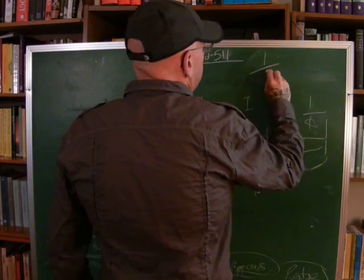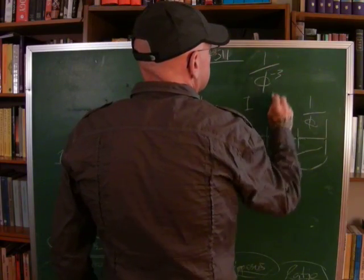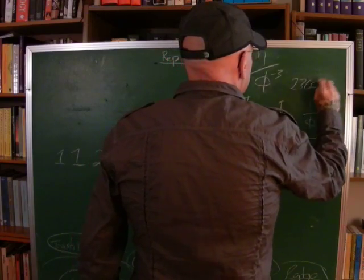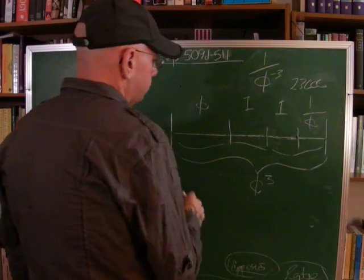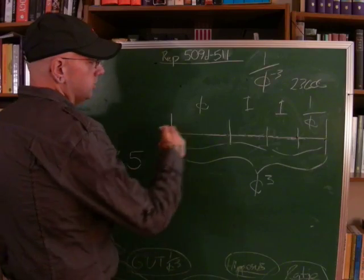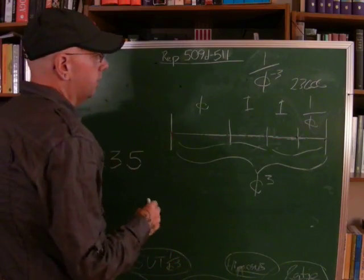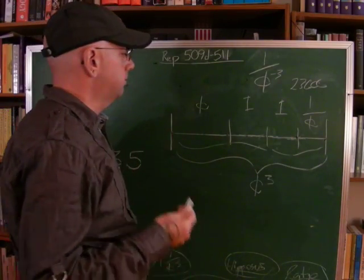We end up with 1 over phi to negative 3, which is 0.23606. 1 divided by phi to negative 3 equals phi cubed, which equals the totality of the divided line.